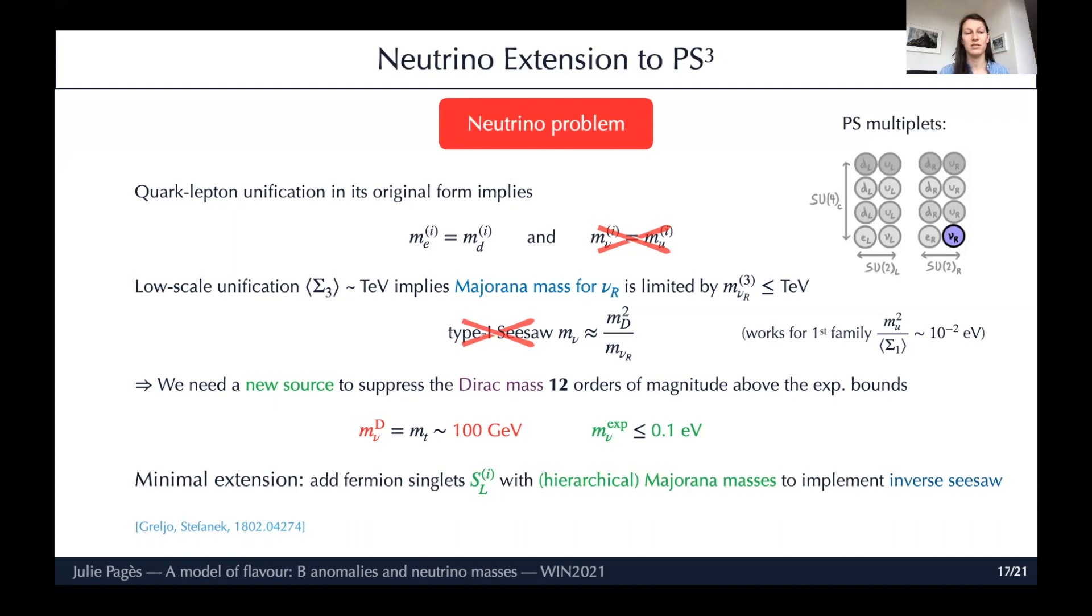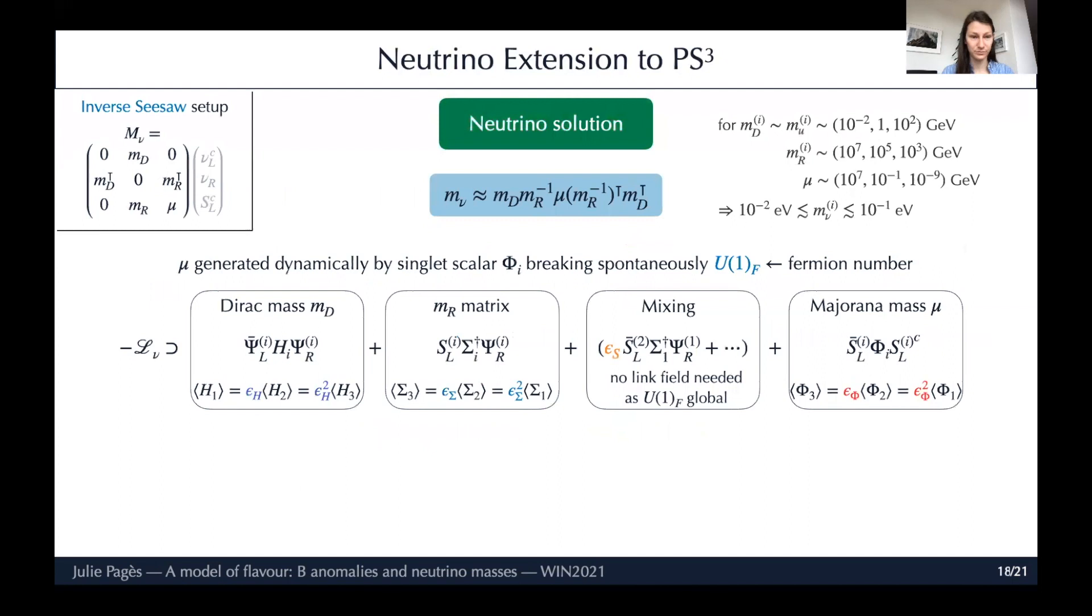The minimal extension is to add fermion singlets S_L with hierarchical Majorana masses to implement inverse seesaw. This was done already in this work by Grillo and Stefanek, but the new thing here is the hierarchical structure of the Majorana masses that I will explain now. The inverse seesaw setup is made of three parts: a Dirac mass between ν_L and ν_R, a Dirac mass between S_L and ν_R, and the Majorana mass for S_L. If we diagonalize this nine-by-nine mass matrix, we obtain the light neutrino mass matrix as the formula in blue.